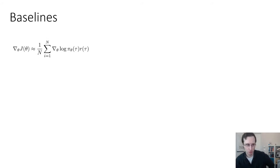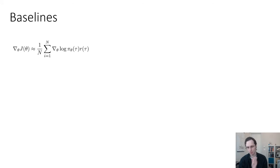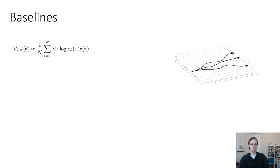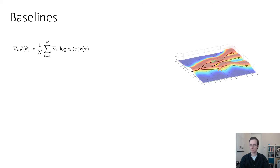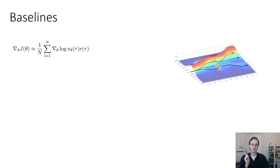That was a simple trick — it always makes things better, especially if your trajectories are long. There's another trick that is very important and also always helps, but it's a little less obvious, and it's called a baseline. We had the intuition that policy gradient formalizes trial-and-error learning: good trajectories are made more likely and bad trajectories less likely. There was a slight lie in this — it's what we'd like to happen, but it's not always guaranteed for the estimator as written.